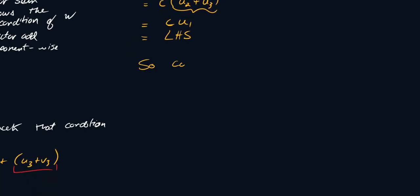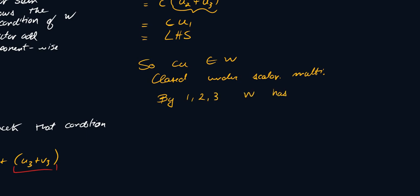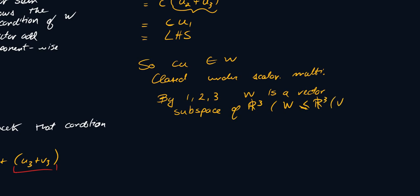So cu belongs to W, meaning W is closed under scalar multiplication. By conditions 1, 2, and 3, W is a vector subspace of R³ — or written more compactly, W is a subspace of R³. That's how you prove any subspace proof. I'll do more examples in the following videos, including cases where it turns out not to be a vector subspace.